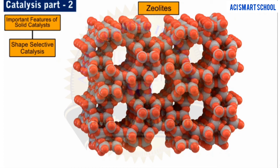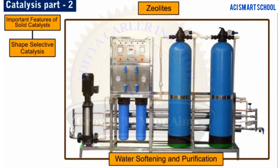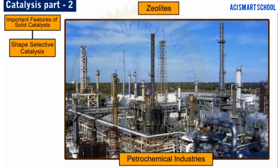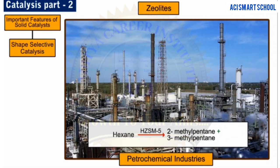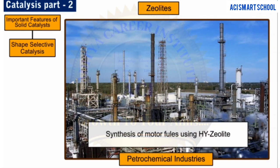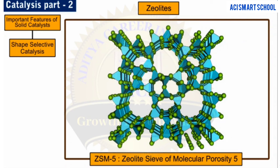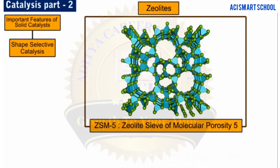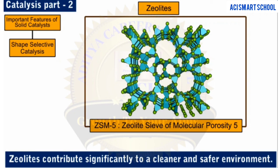Because of their unique porous properties, zeolites find applications in a variety of processes. Zeolites are commonly used in water softening and purification, in synthesis of high-value pharmaceuticals, and in petrochemical industries for cracking hydrocarbons, isomerization, and fuel synthesis. An important zeolite catalyst used in the petrochemical industry is ZSM-5, which is a zeolite sieve of molecular porosity 5. ZSM-5 converts alcohol directly into gasoline or petrol by dehydrating it, resulting in a mixture of hydrocarbons. All applications of zeolites are driven by environmental concerns and they contribute significantly to a cleaner and safer environment.